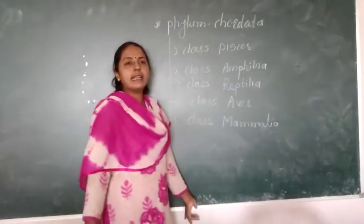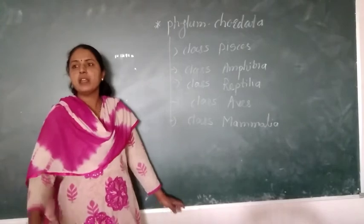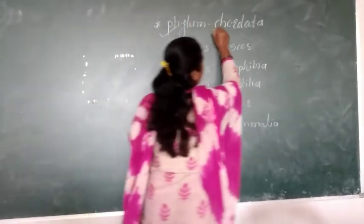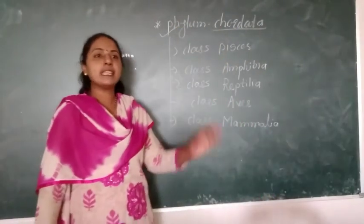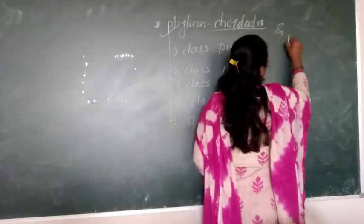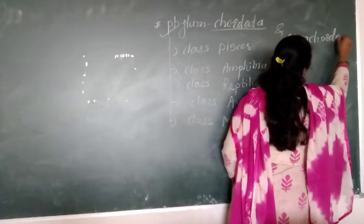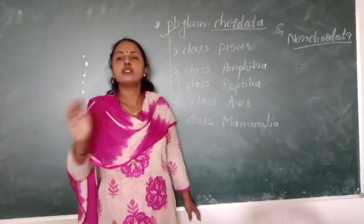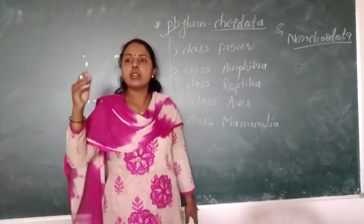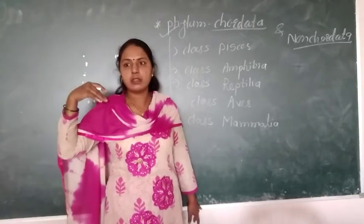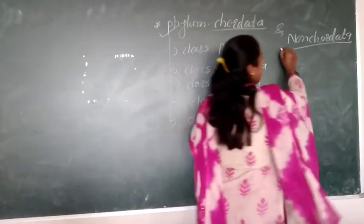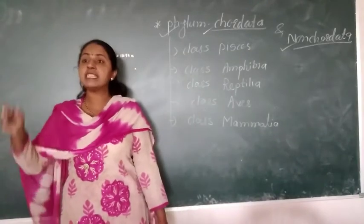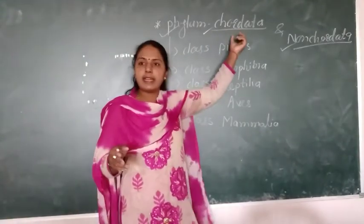Good morning students. In the last lecture we studied about phylum Porifera to Echinodermata. Today we are going to study about phylum Chordata. Let us see first what is the difference between Chordata and non-Chordata. Non-Chordata means the organism without backbone, without vertebral column. Chordata means the organism which has a backbone, which has a vertebral column.